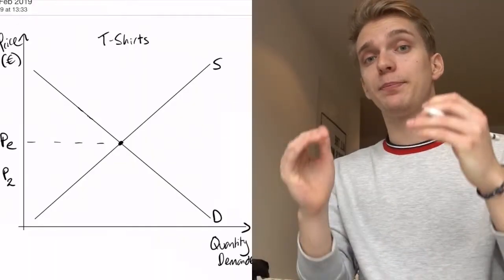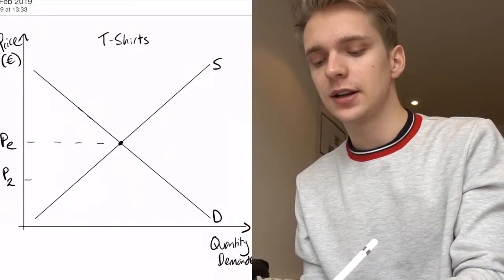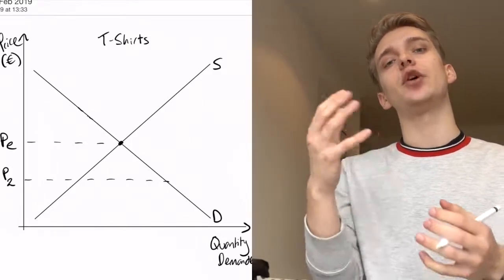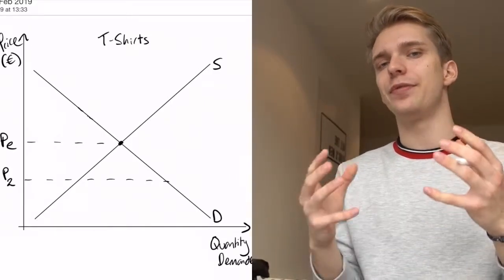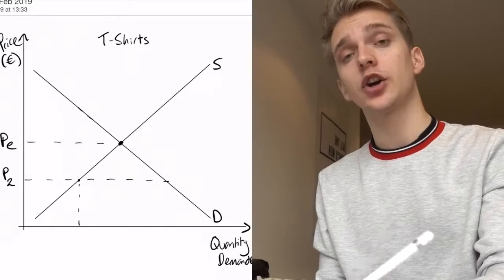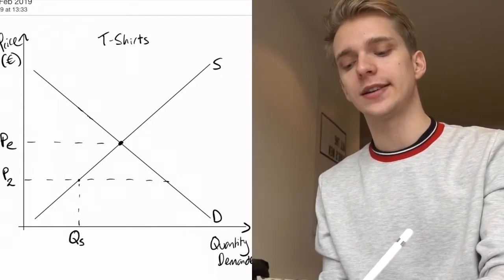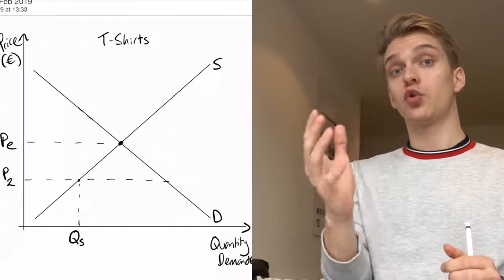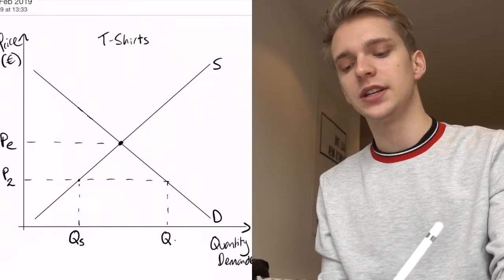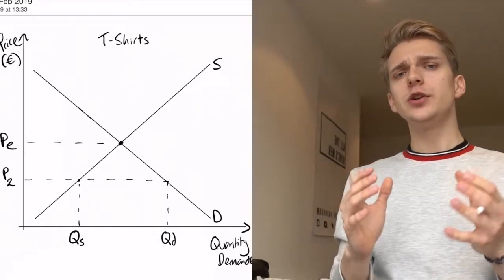Now let's suppose that instead of producers setting too high a price, they set too low a price — suppose they set price P2 where P2 is below the equilibrium price. Let's look at what the quantity demanded and quantity supplied are at this price. The quantity supplied is wherever the supply curve is at that price — we'll label that QS. The quantity demanded, on the other hand, is much higher — all the way over here.